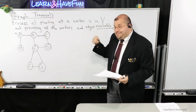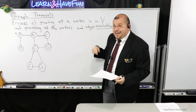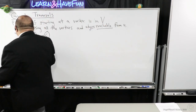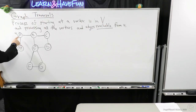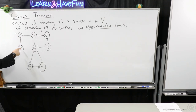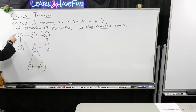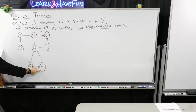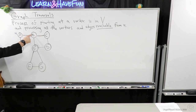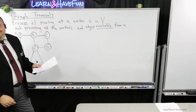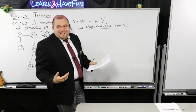We call it simple if there's no repeating vertices. Notice that from A, I can get to H, I can get to B, I can get to C, following some pathway. I can also get down to G by going down like that. So there are a lot of pathways I can take.